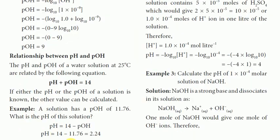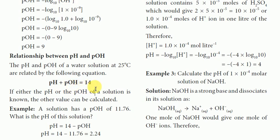So the relationship between pH and pOH: the pH and pOH of a water solution at 25 degrees centigrade are related by the following equation. pH plus pOH equals 14.